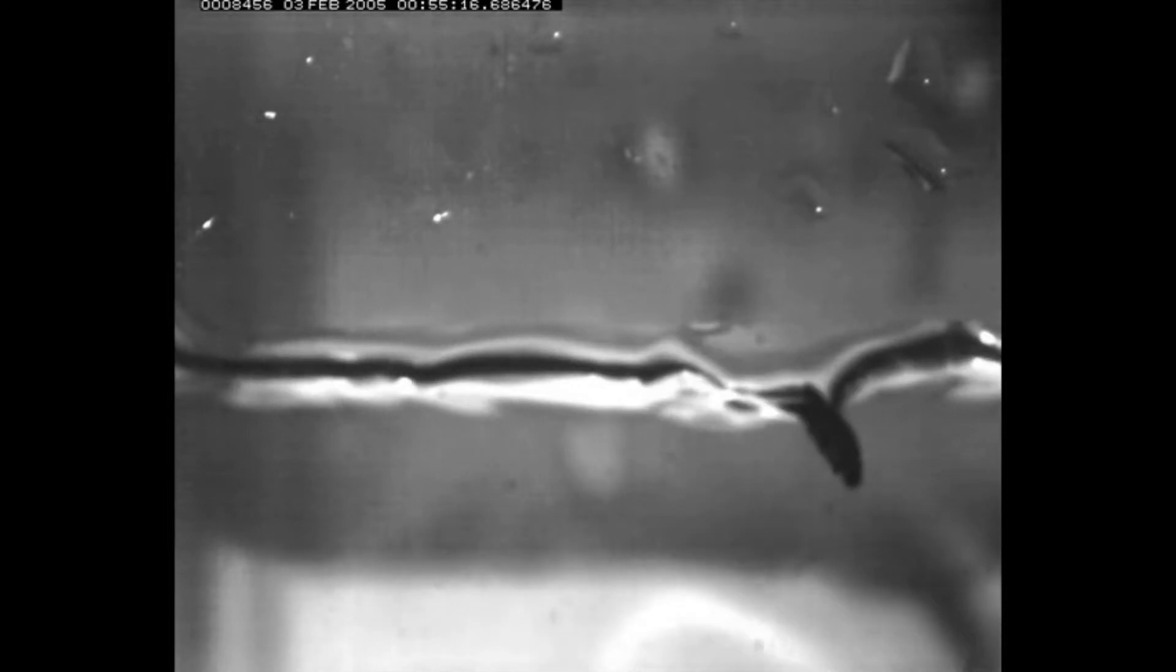Continuing down the spectrum, we have the whirligig beetle which lives mostly at the surface but can also dive underwater. To breathe underwater, it carries with it an air bubble called a plastron, which in the applicator beetle design is represented by a bead.